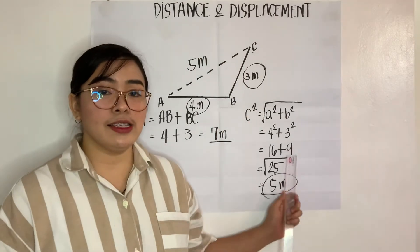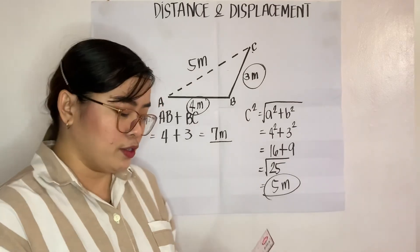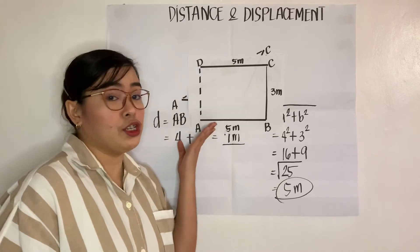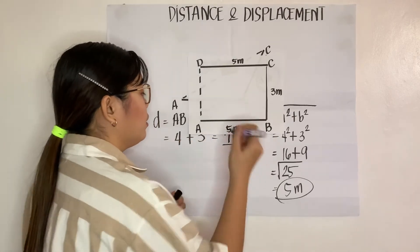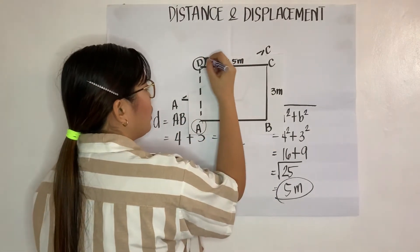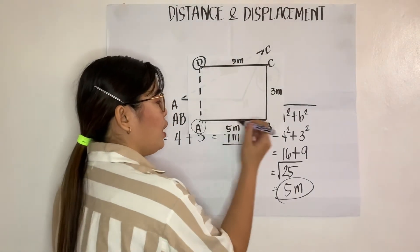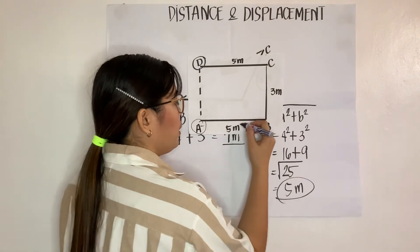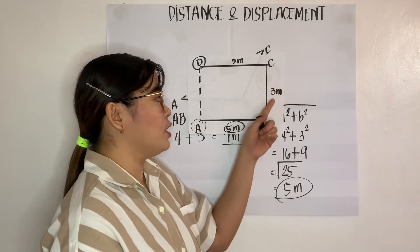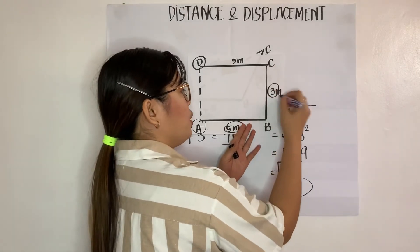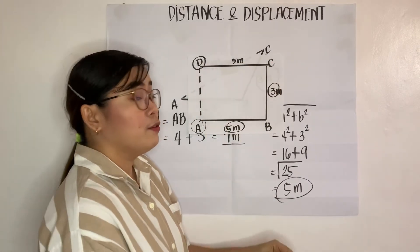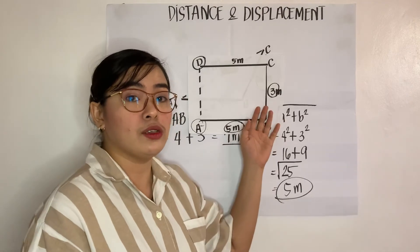our displacement for this example is 5 meters. Do you get this? Okay, very good. Our next example will be this one. This is your initial position which is the letter A. And you are going to the store which is this one. Your initial position from point A to point B will be 5 meters. Okay? And then from point B to point C is 3 meters. And then from point C to point D is 5 meters. So, what is the distance for this example?